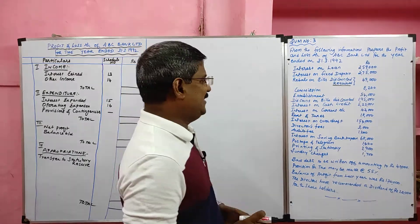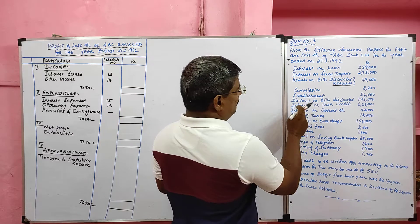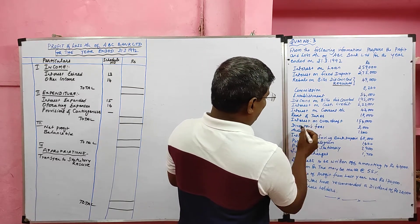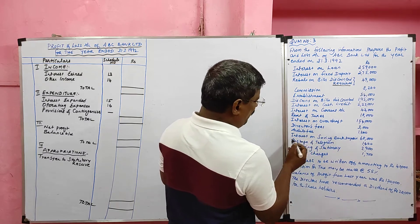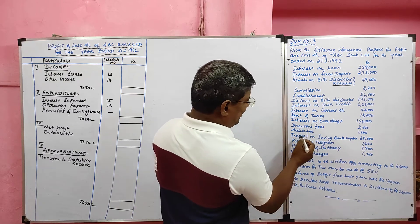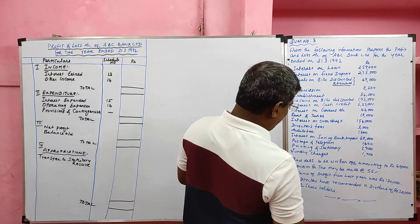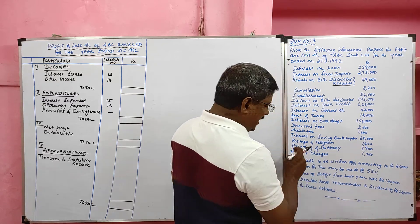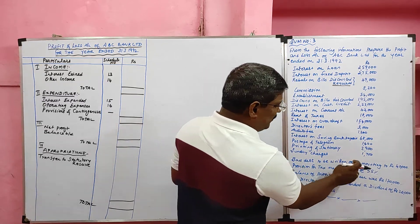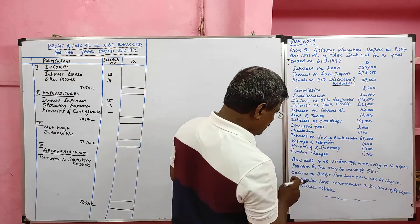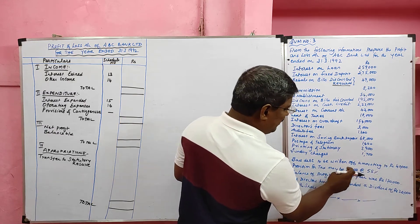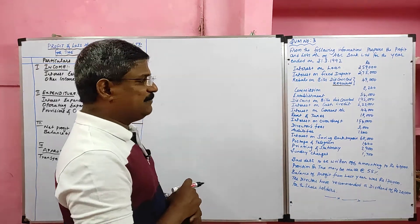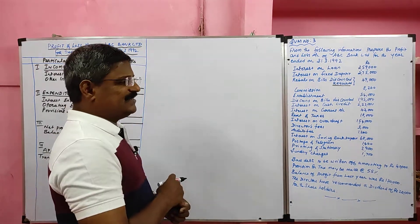Other items include commission, establishment, discount on bill discounted, interest on cash credit, interest on current account, rent and taxes, interest on overdraft, director fees, auditor fees, interest on saving bank deposit, postage and telegram, printing and stationery, and sundry charges. Adjustments include bad debts to be written off amounting to rupees 40,000 and provision for tax to be made at 55 percent, which we have to calculate.